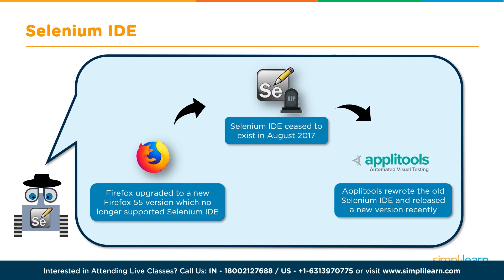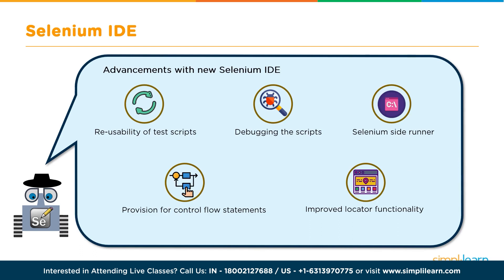Selenium IDE was originally only a Firefox extension. It was available since Selenium version 1 but stopped being supported from Firefox version 55 (around 2017). Very recently, a brand-new Selenium IDE was launched by Applitools, made cross-browser — available as a Chrome extension and Firefox add-on. They revamped the IDE code and made it available on GitHub under the Apache 2.0 license. The new IDE brings features like test case reusability, a better debugger, and parallel test case execution.